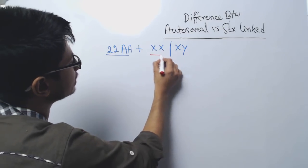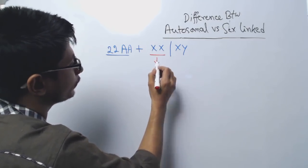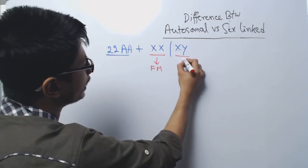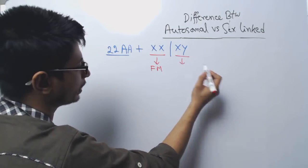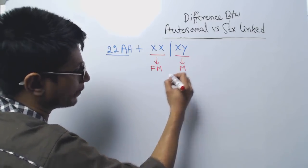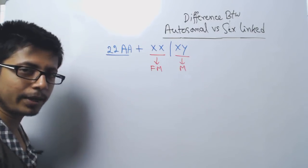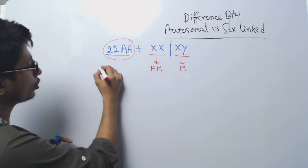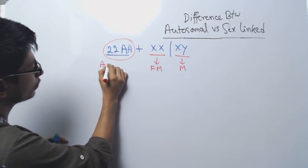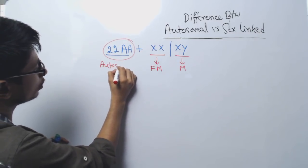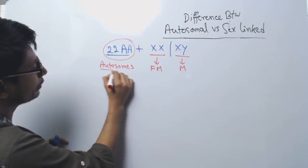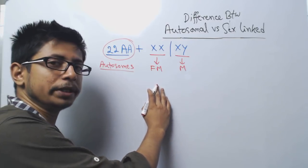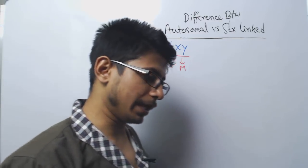In that sex chromosome pair, we can have either XX or XY. If we have XX, that is female; if we have XY, that is male. The rest of the body chromosomes are known as autosomes, and the autosome number remains the same for both female and male bodies.